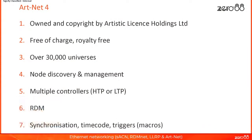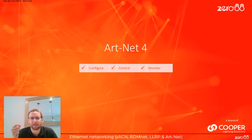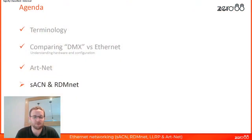Art-Net also supports synchronisation: when sending hundreds or thousands of universes, you need them all to change simultaneously when you hit go. Art-Net solves this with synchronisation, ensuring no visible staggered updates across universes. It also handles triggers, timecodes, and other features. So in summary, Art-Net allows you to configure, control, and monitor — the three things we wanted to do.